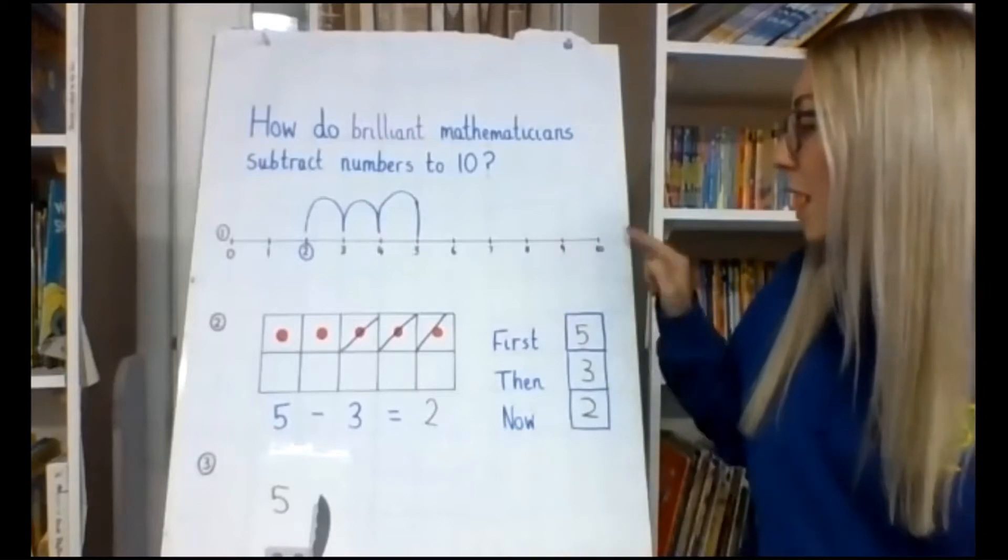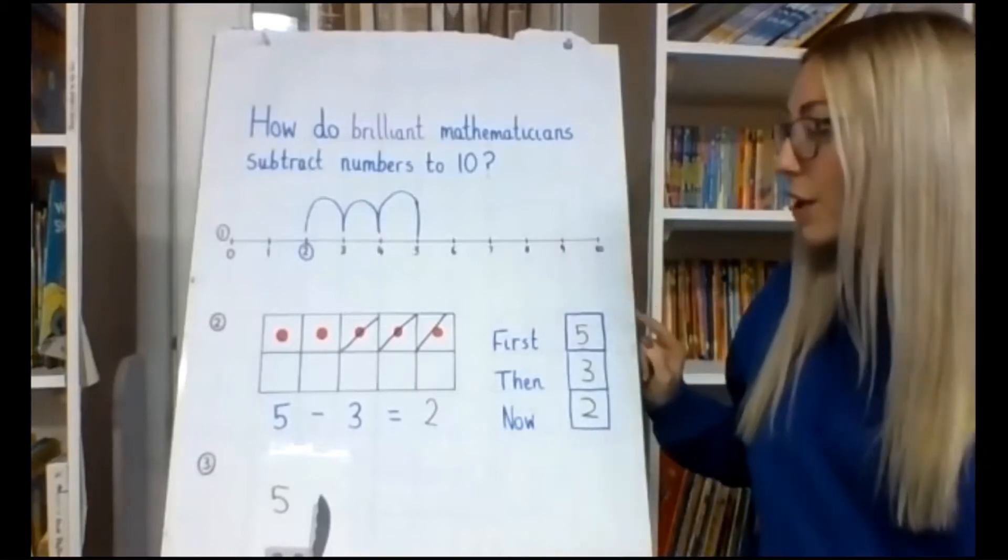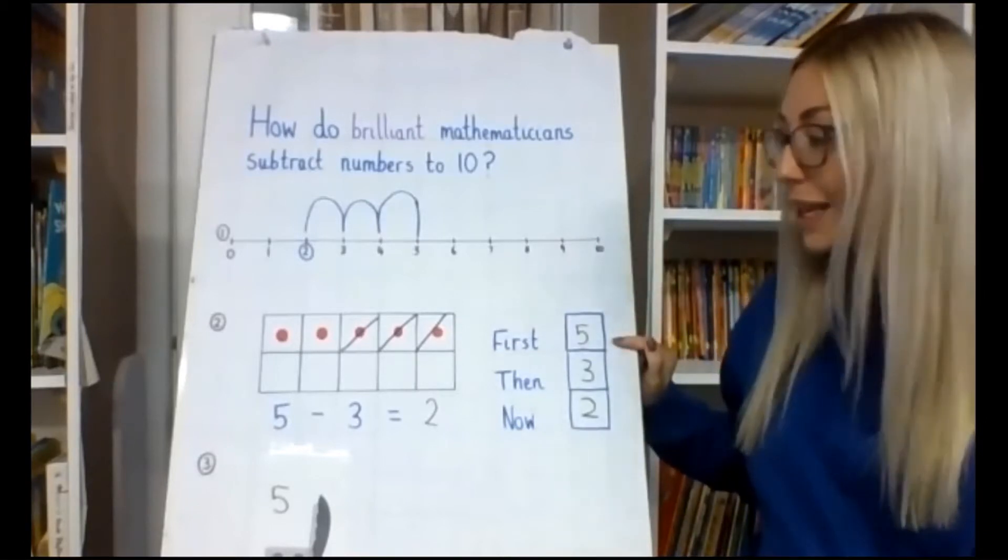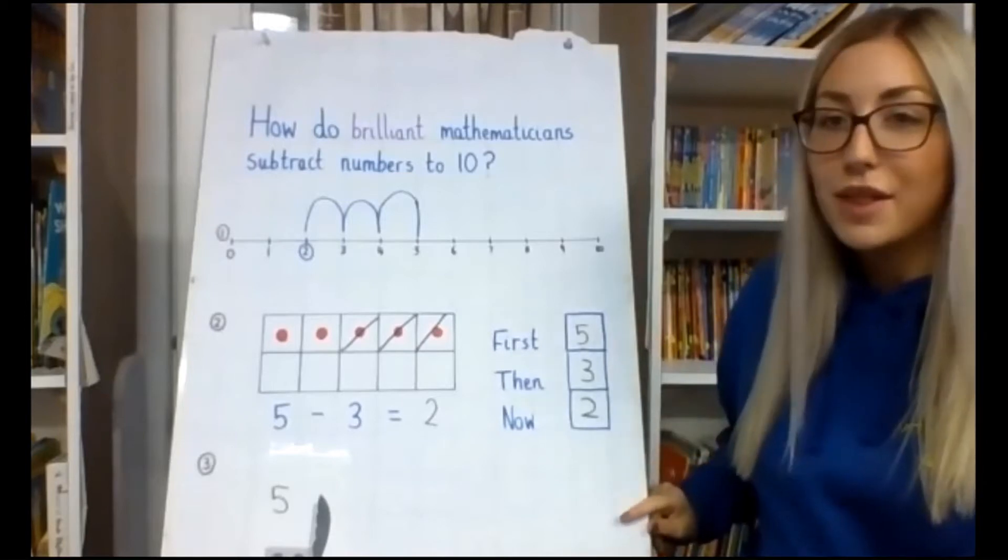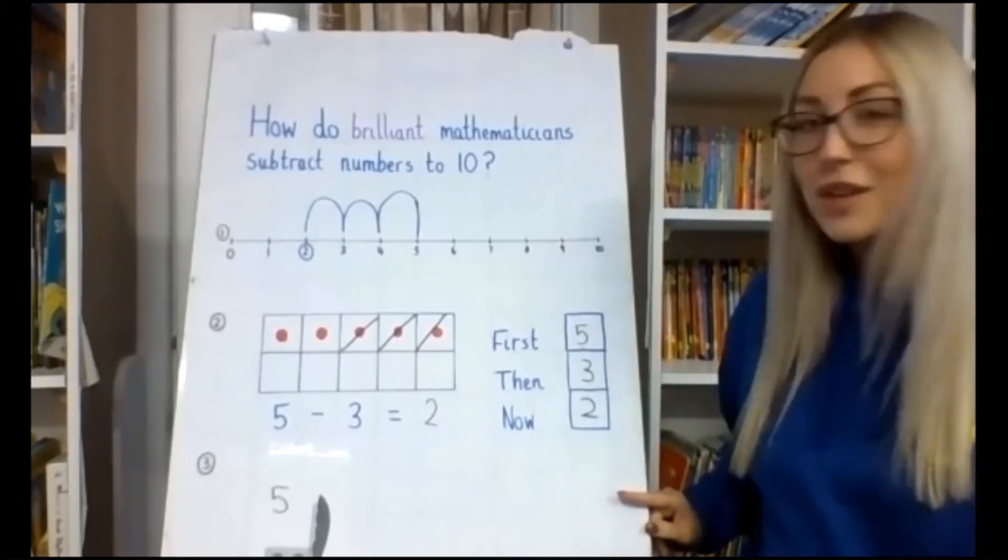The first method was our number line method, we looked at using a 10 train for our second method, and our third method was counting in our head for a mental math method.